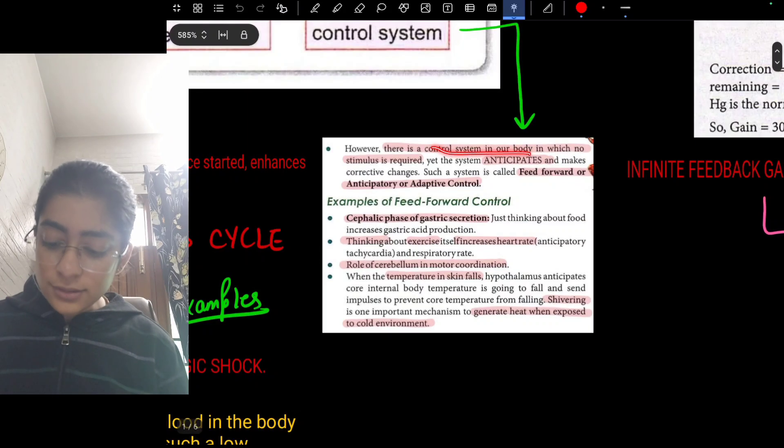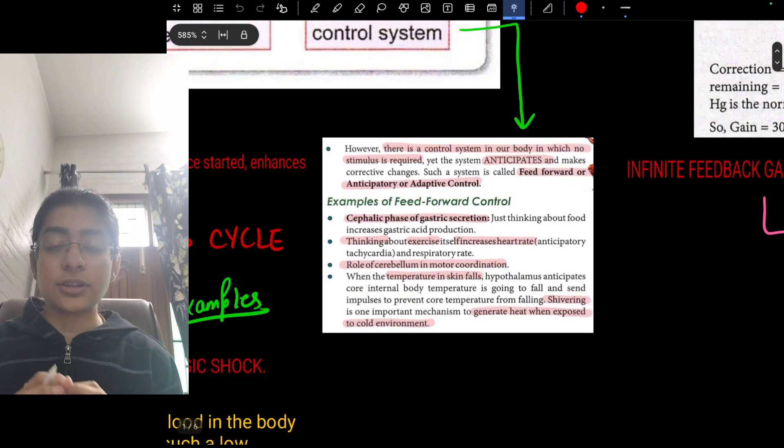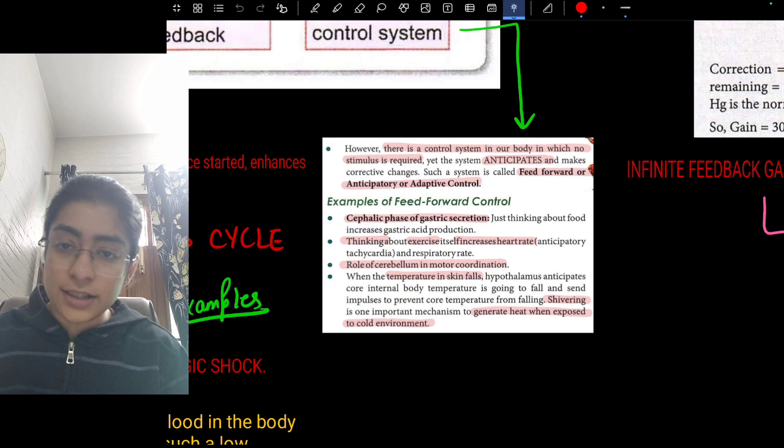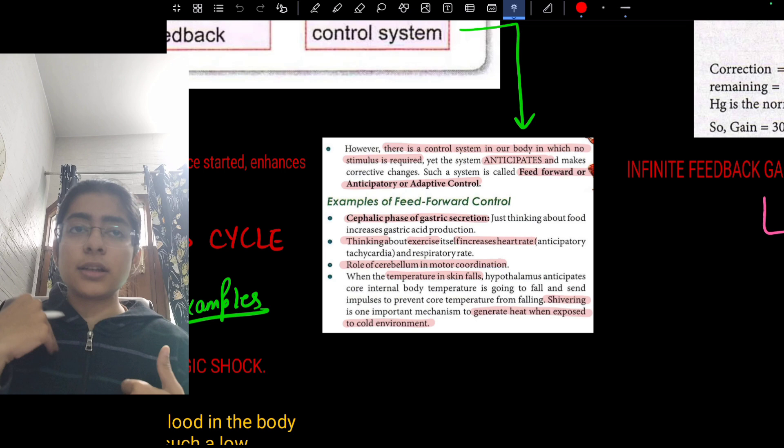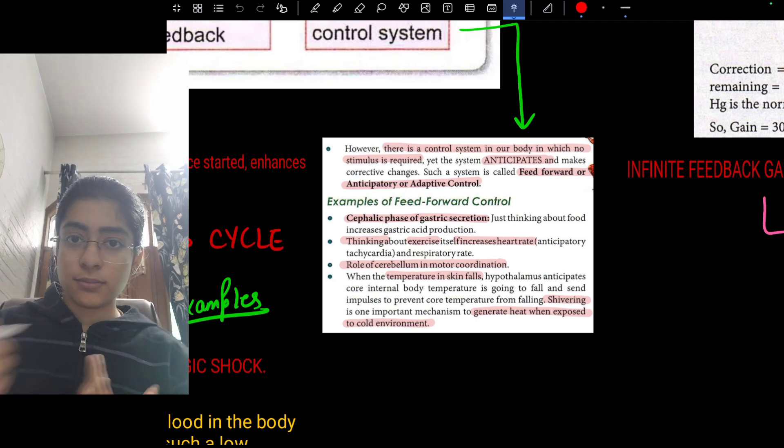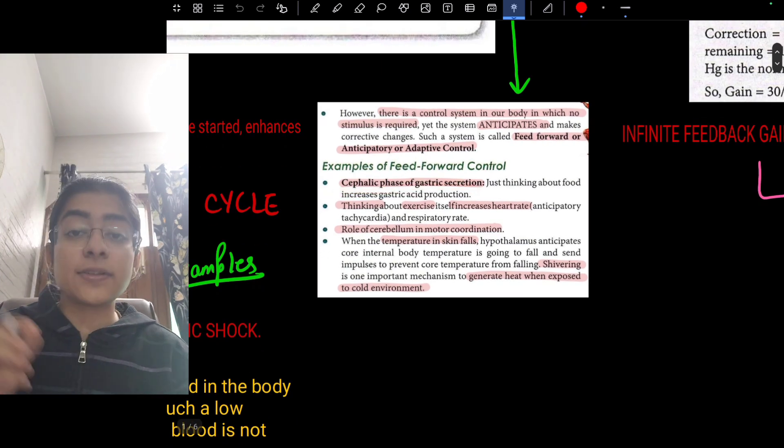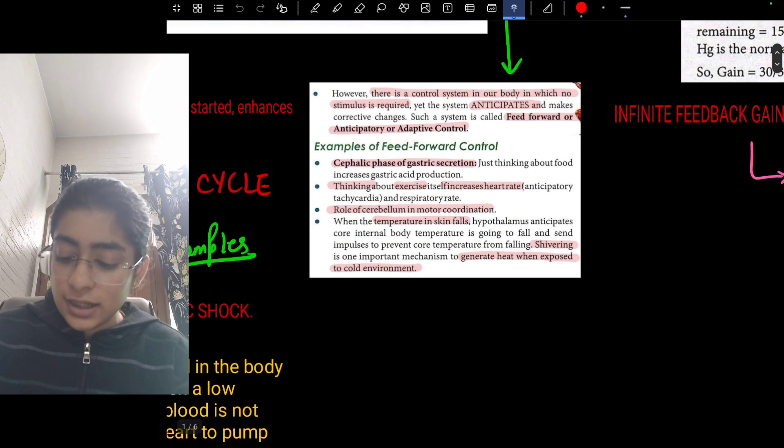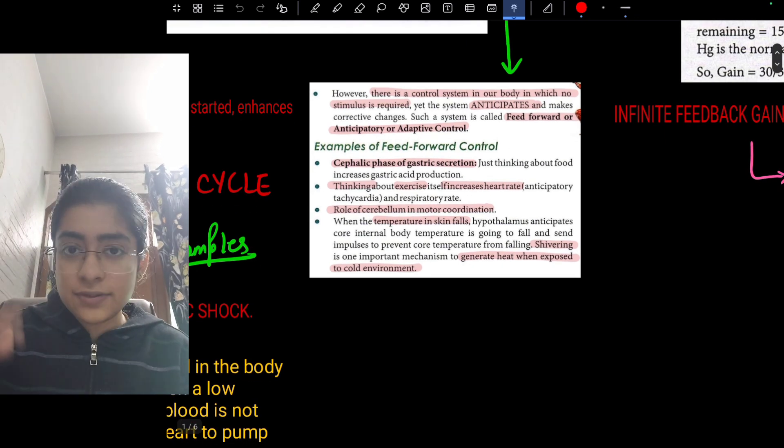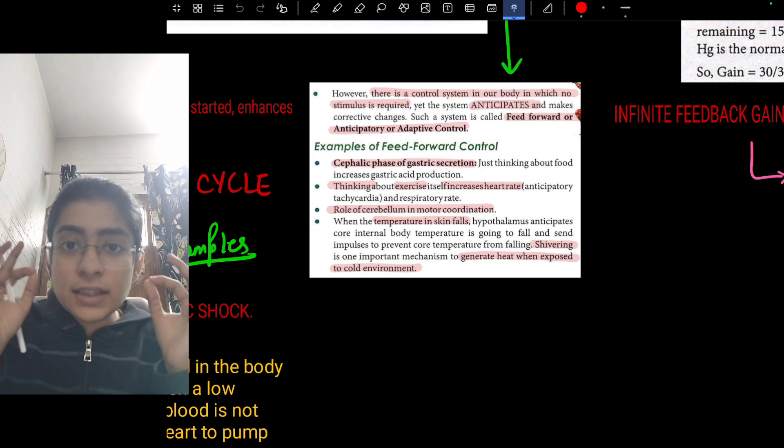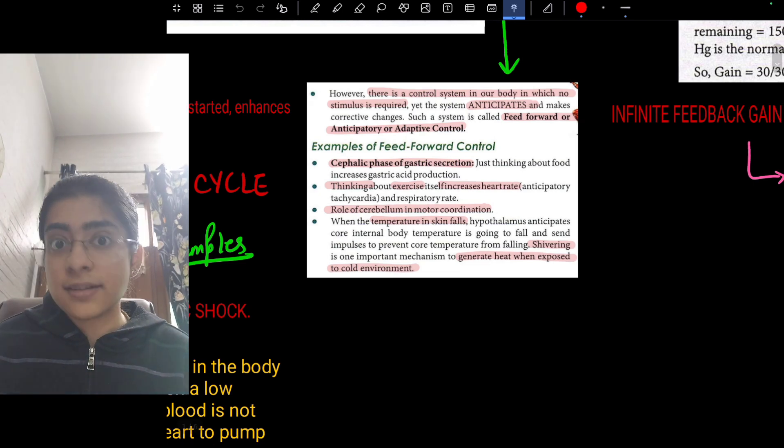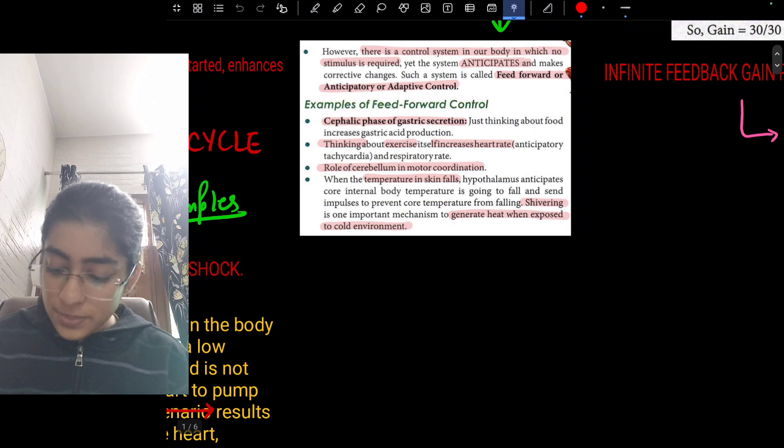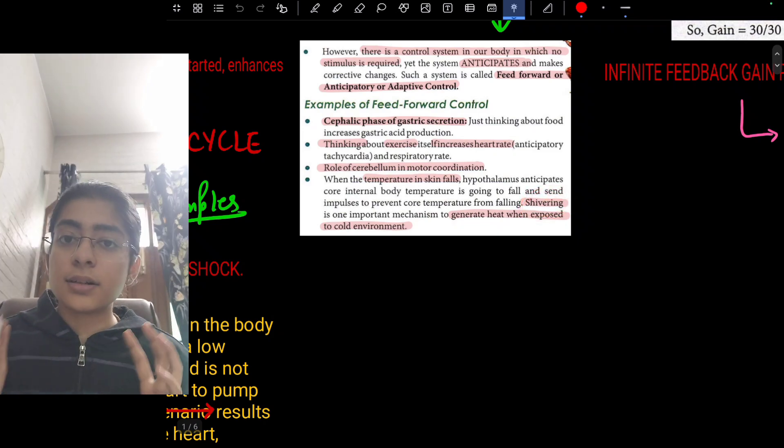Next is feedforward. There is a control system in our body which requires no stimulus. Basically there is apprehension and it anticipates what will happen in the future so that we can take steps beforehand. Examples: cephalic phase of gastric secretion. When we think of food we have salivation and gastric acid secretion. Tachypnea when we think of exercise. And shivering is also an anticipation of cold temperature.